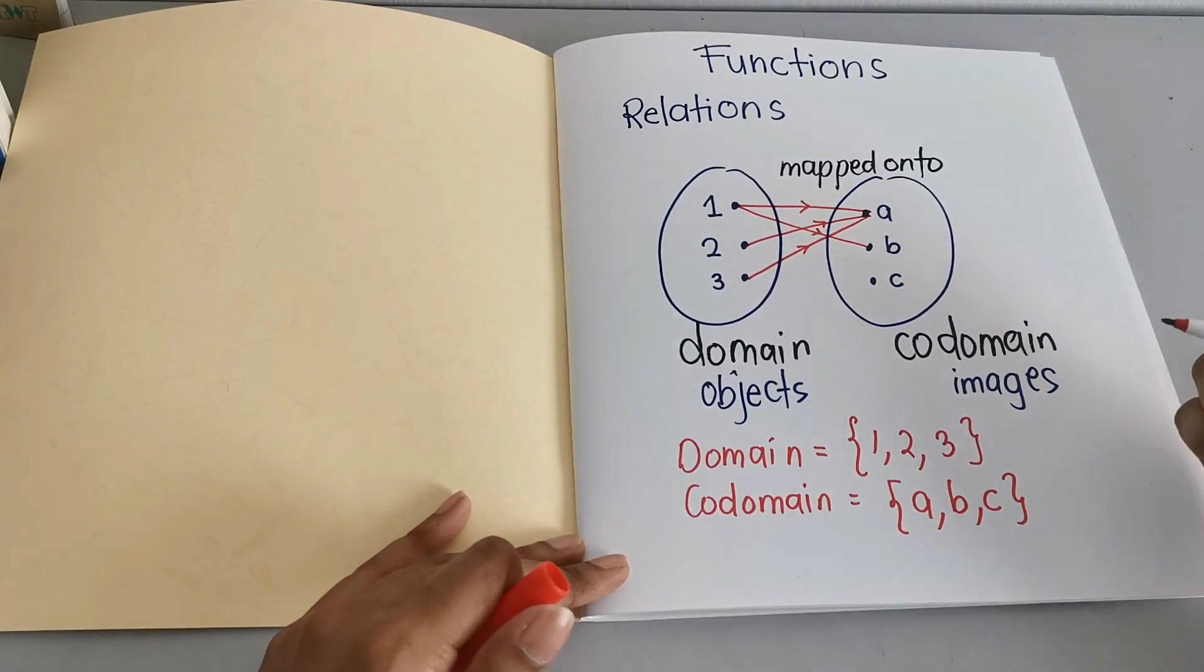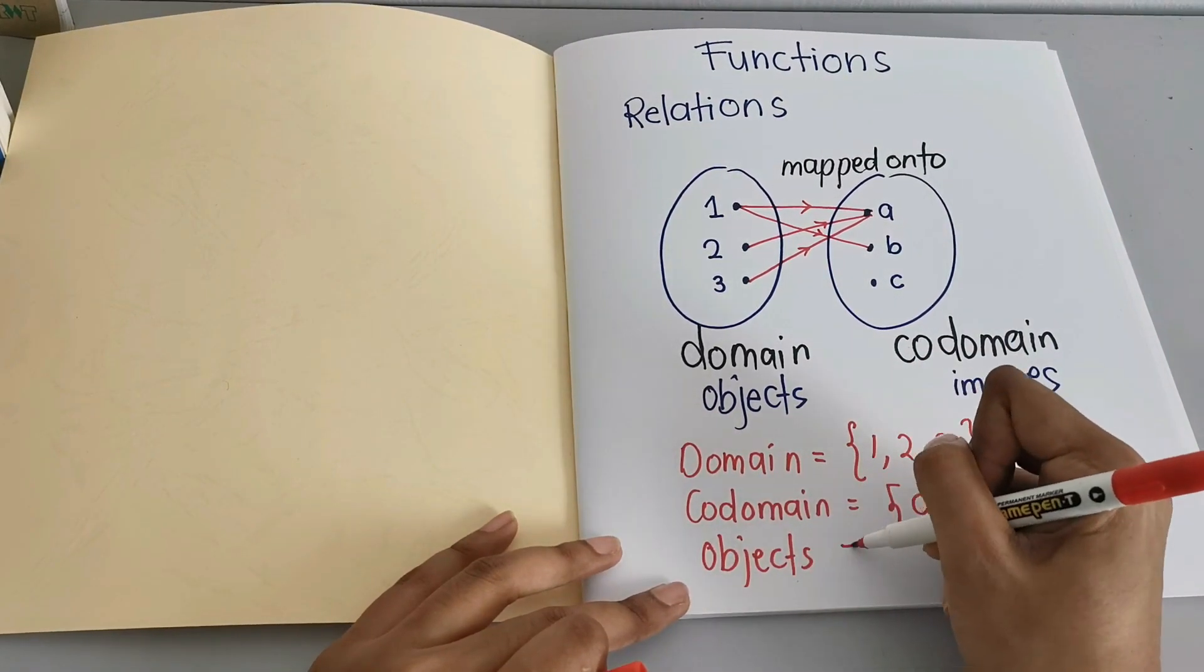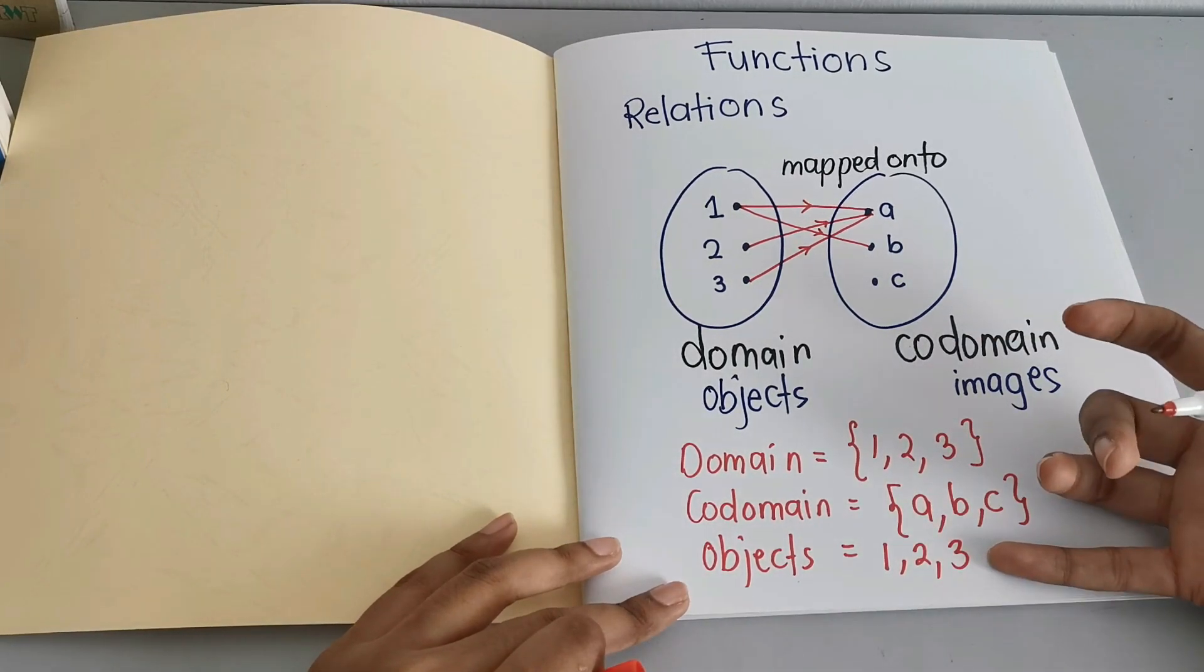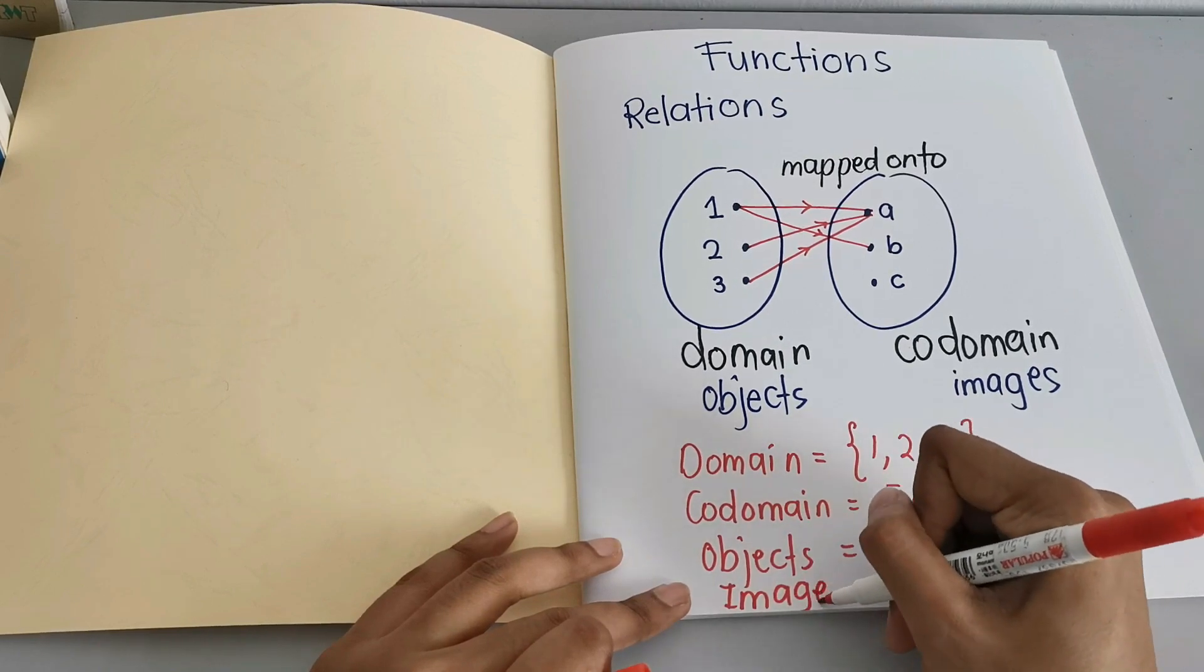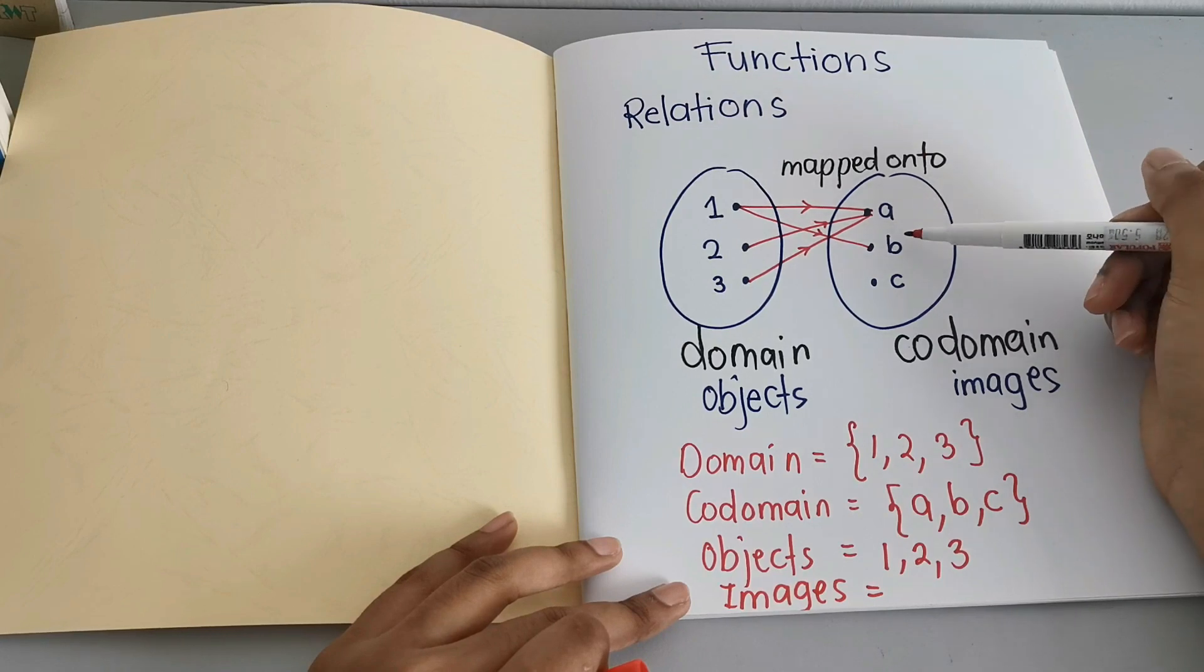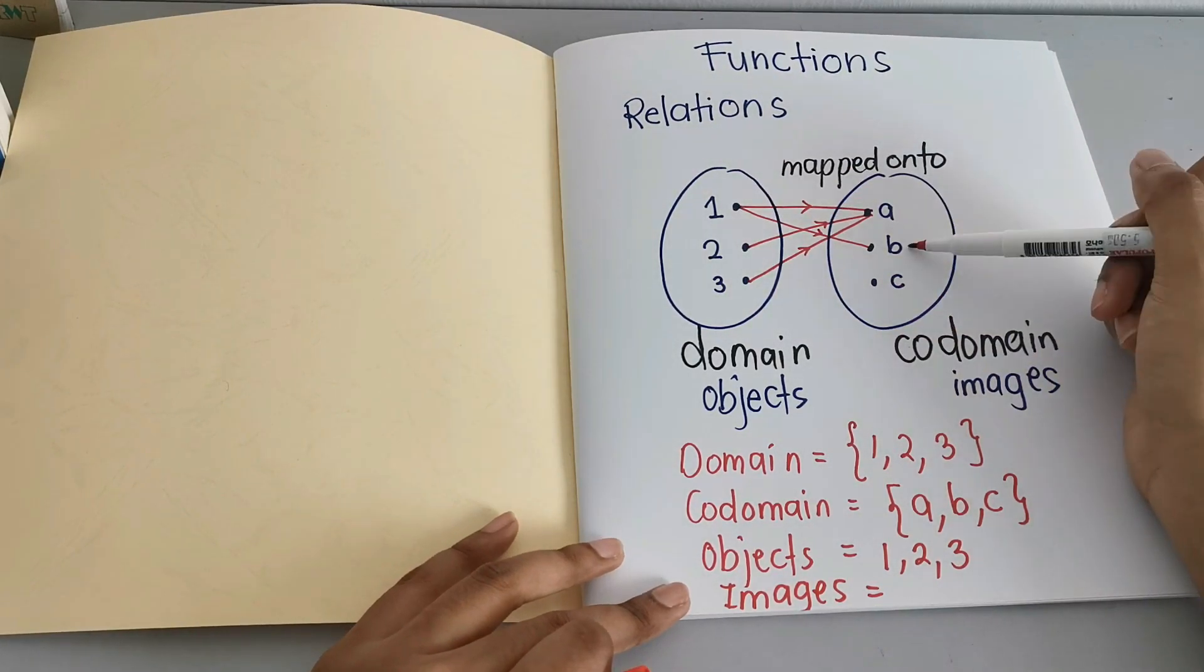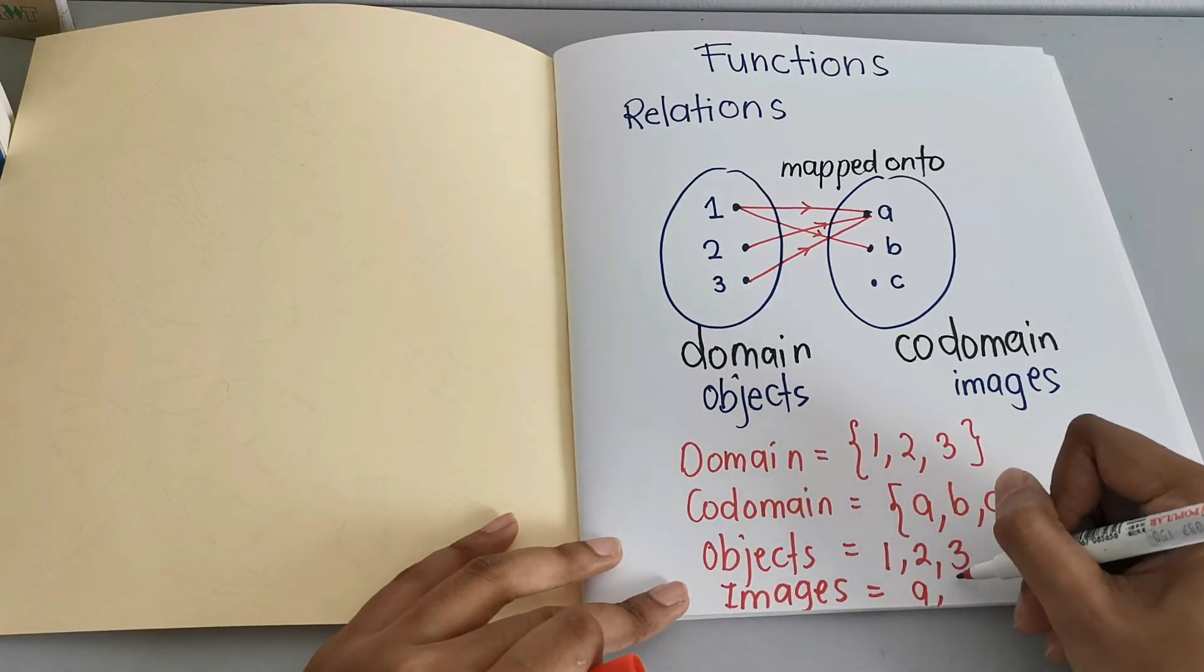Now what are the objects? Objects, we just write 1, 2, 3. We don't have to put the curly bracket. What are the images? As you can see, the images here are only A and B because the elements here are only mapped to A and B. C, it's not, so we only write A, B.